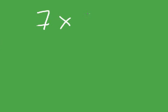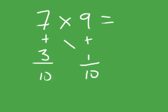7 times 9. 7 plus 3 equals 10. 9 plus 1 equals 10. 7 minus 1 equals 6. 3 times 1 equals 3. So the answer is 63.